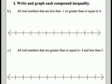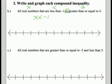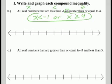For b: all real numbers that are less than negative 1 or greater than or equal to 4. We have all real numbers — that's variable x — less than negative 1, or greater than or equal to 4. These two are separated by the word 'or,' so when you write an inequality using 'or,' you write them as two separate inequalities: x < -1 or x ≥ 4.